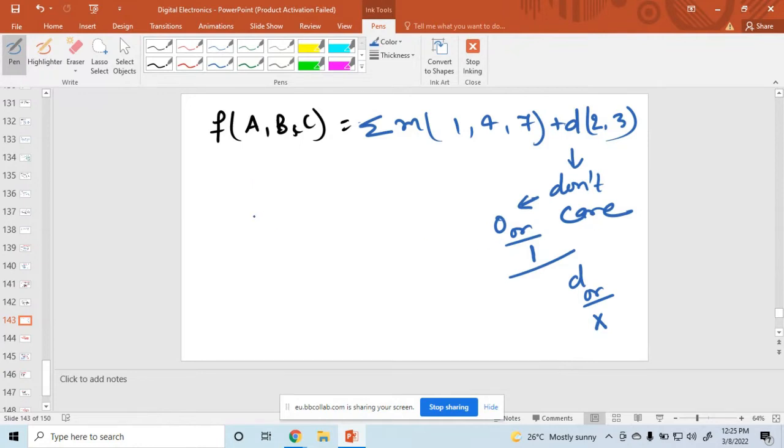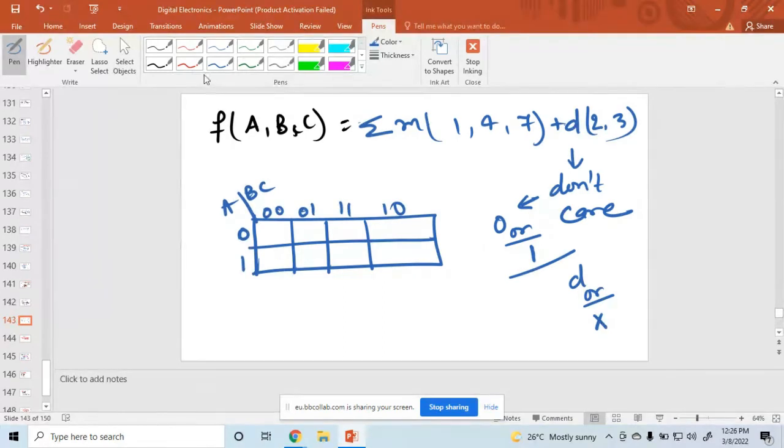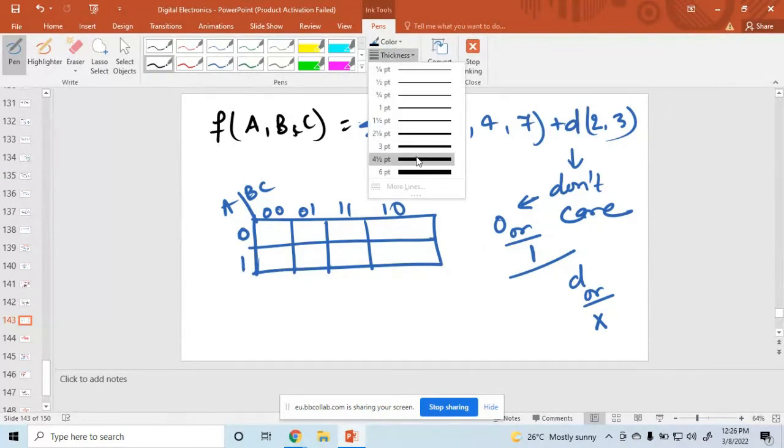So just now I'll start the K-map. See the variables - A, B, C is the variable. A is 0, 1, BC is 00, 01, 11, 10 like this, and then fill the values.